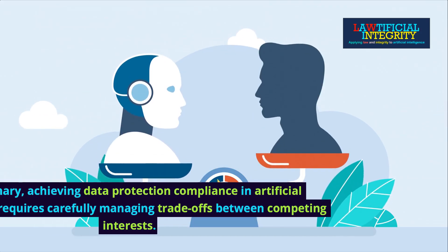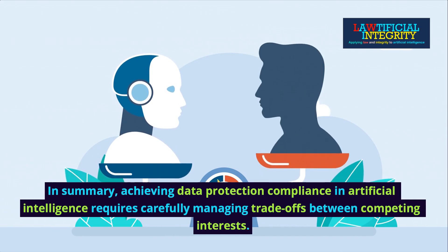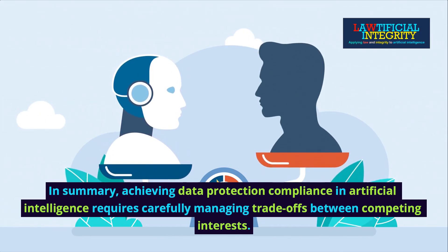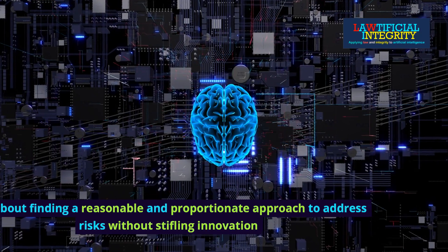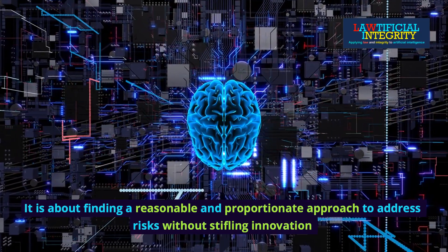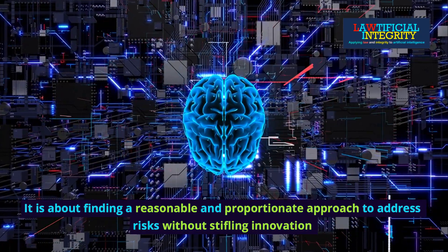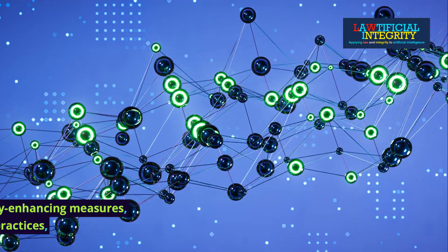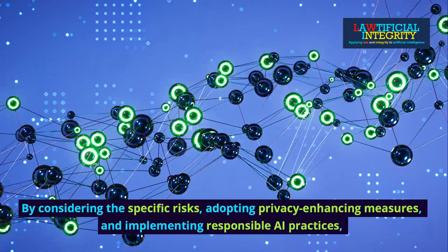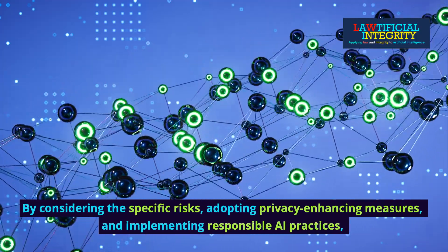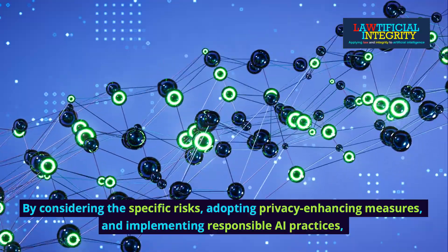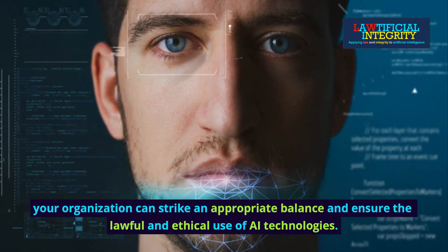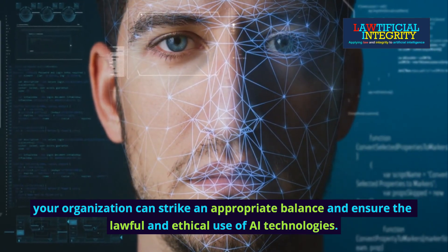In summary, achieving data protection compliance in artificial intelligence requires carefully managing trade-offs between competing interests. It is about finding a reasonable and proportionate approach to address risks without stifling innovation or compromising people's rights and freedoms. By considering the specific risks, adopting privacy-enhancing measures, and implementing responsible AI practices, your organization can strike an appropriate balance and ensure the lawful and ethical use of AI technologies.